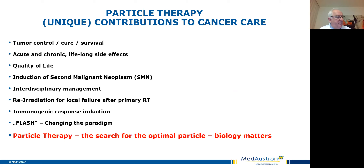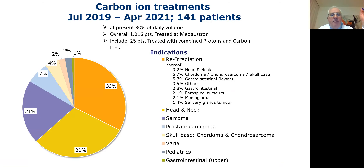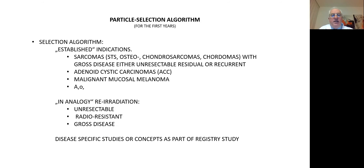Now let's discuss other particles — primarily carbon ions. When we look at the patient mix at MedAustron, where we have had carbon ions since July 2019, right out of the gate we saw re-irradiation, then head and neck tumors, sarcomas, and even prostate cancer. The established indications for carbon ions include sarcomas with gross disease — either unresectable, residual, or recurrent — adenoid cystic carcinomas, malignant mucosal melanomas, and re-irradiation concepts.